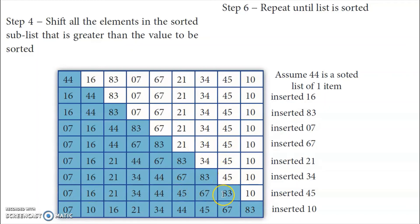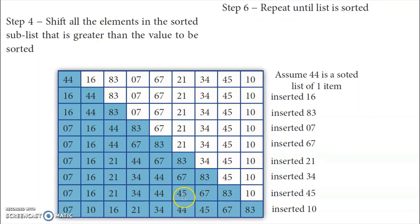At the last element, it starts comparing from the first position in the sorted sublist. Comparing with 7 — bigger. Then 16 — the element is lesser than 16. So the element has to be inserted before 16. All the elements from that position shift one place: 83, 67, 44, 34, 21, and 16 shift one place. So 10 gets inserted in the correct position.